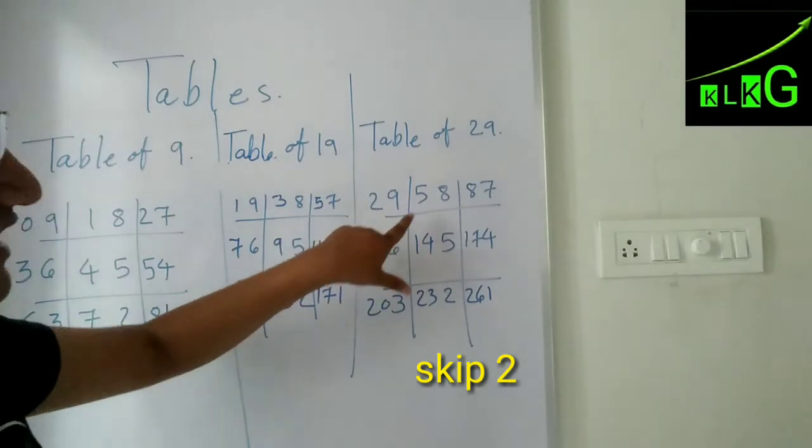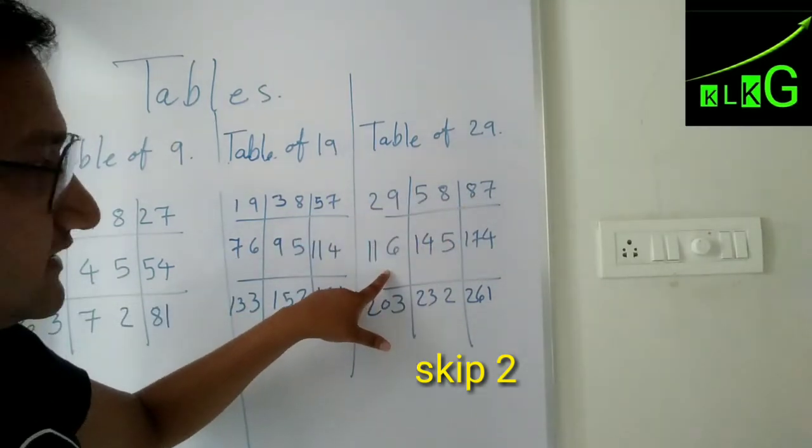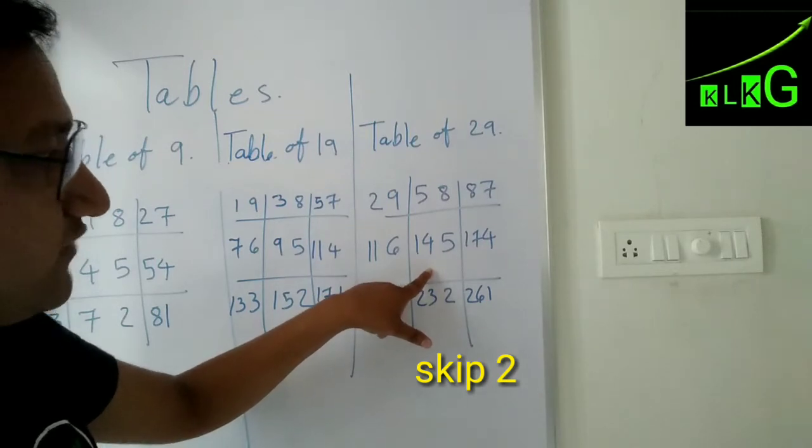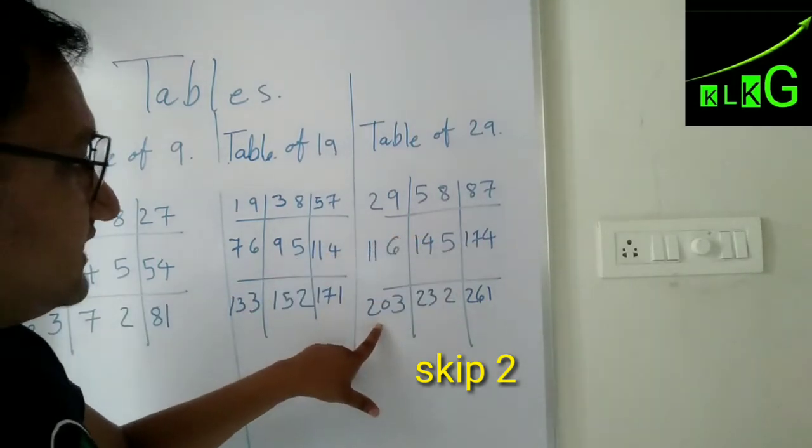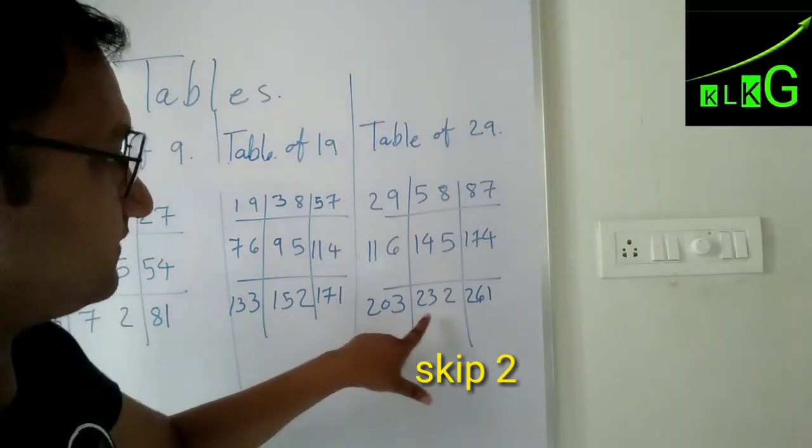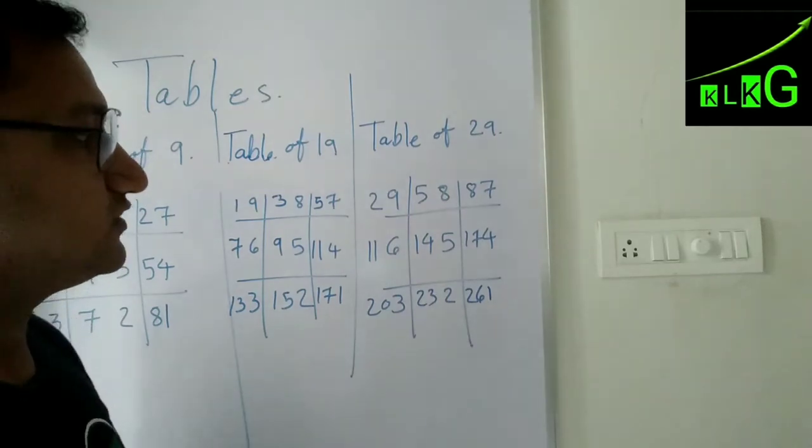So 29 ones are 29, 29 twos are 58, 29 threes are 87, 29 fours are 116, 29 fives are 145, 29 sixes are 174, 29 sevens are 203, 29 eights are 232, 29 nines are 261.